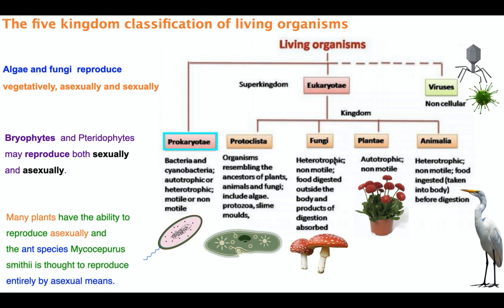Protista includes unicellular protozoa, some algae, and fungi as well. Fungi are heterotrophic, meaning they don't use carbon dioxide as their body carbon source. They are a big group with many classes. Plants are autotrophic, meaning they use air carbon dioxide as their body carbon source. Animals are heterotrophic — they are not primary producers, they are always consumers.